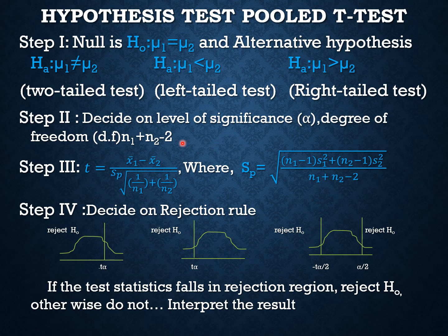Then we decide on the level of significance, degree of freedom. Because two independent samples are involved, the degree of freedom is n1 plus n2 minus 2, as marked in red.